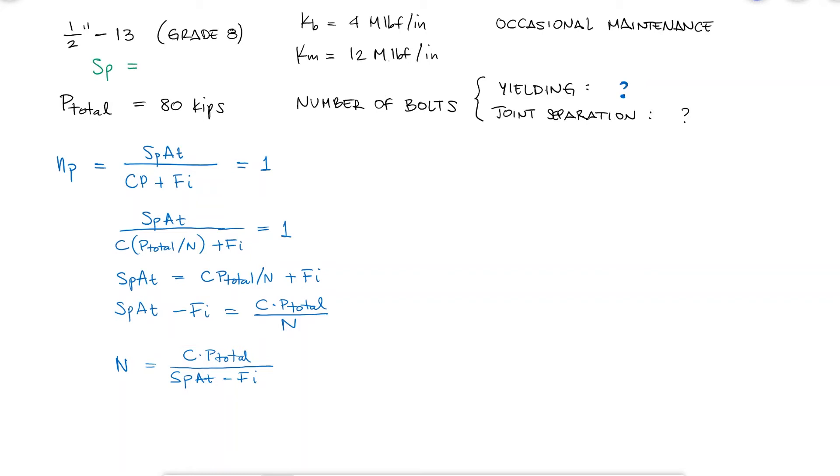We can find the proof strength of a grade 8 bolt in English units, and for the tensile stress area AT, we can either look it up in the textbook table like we did in the main video, or we can calculate it by using the mean diameter between the root diameter and the pitch diameter like we did two main videos ago, link below.